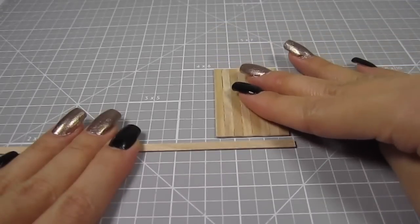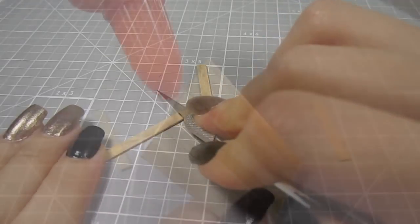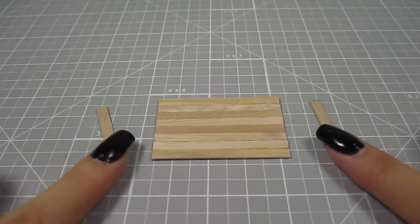Grab another coffee stirrer and line it up against the shorter side of the rectangle. Mark the length you need and cut out 2 of these lengths. Glue them onto the edge of the tray to act as the tray's ledge.